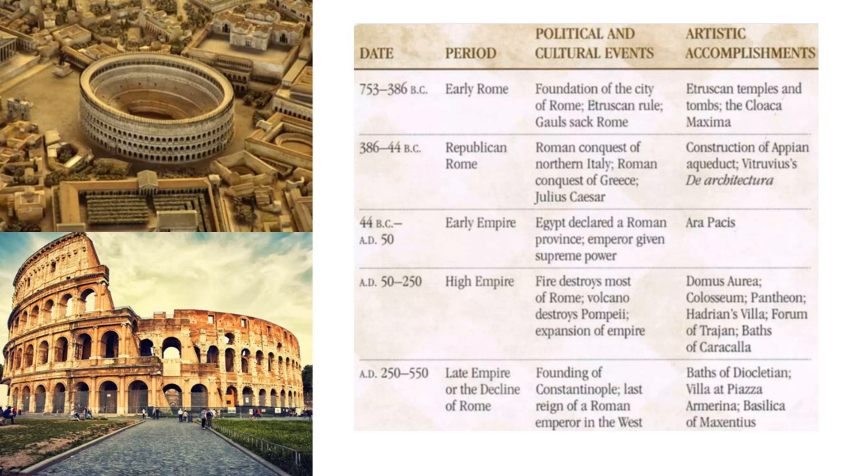The high empire happened in 50 to 250 AD, during which fire and volcanic destruction devastated much of Rome. The major accomplishments of this period were the Colosseum, the Pantheon, Forums and the Baths of Caracalla. Then in 250 to 550 AD, the late empire and the decline of Rome happened, including the founding of Constantinople and the last reign of the Roman emperor in the west. Major accomplishments included the Baths of Diocletian, the Piazza, and the Basilica of Maxentius.